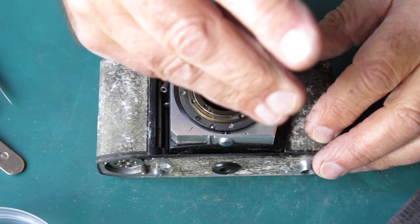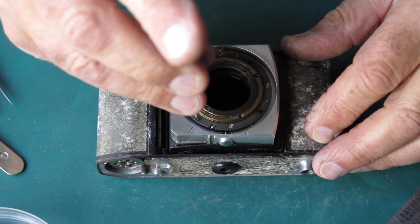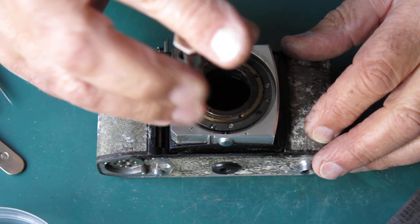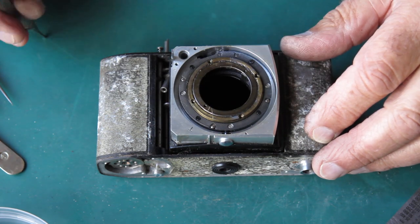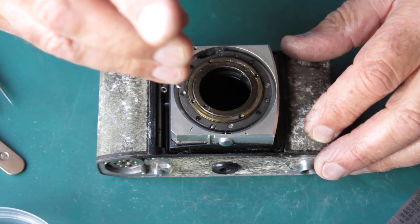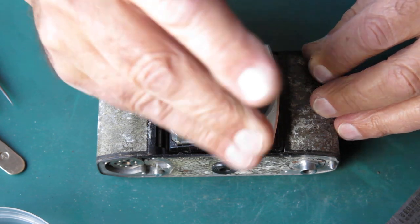We'll have them out. Four flathead screws, or countersunk screws, hold the retaining ring in place.